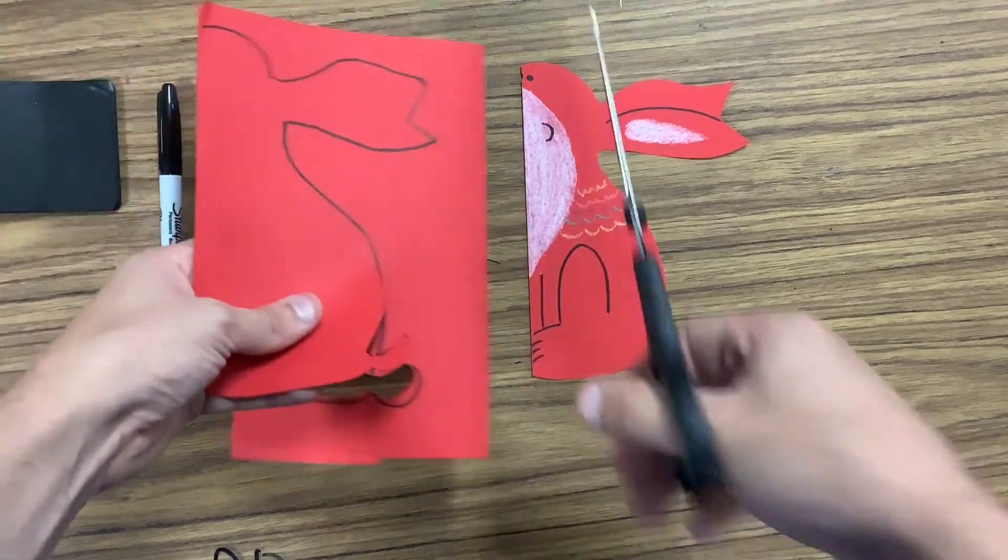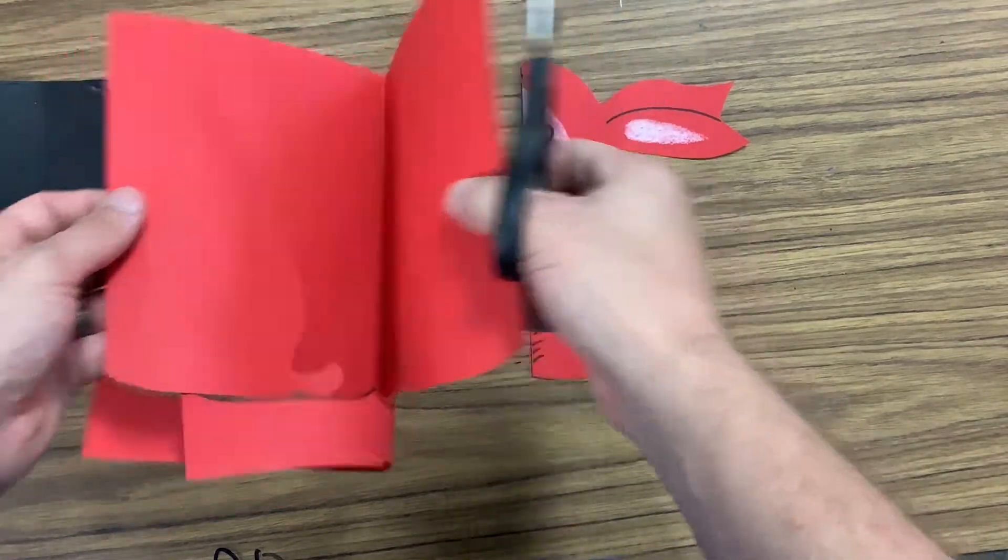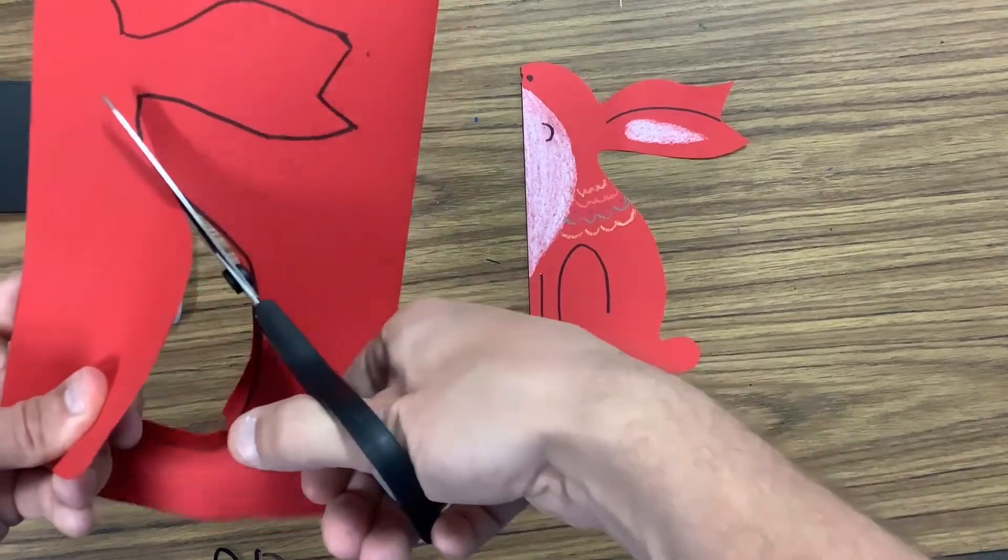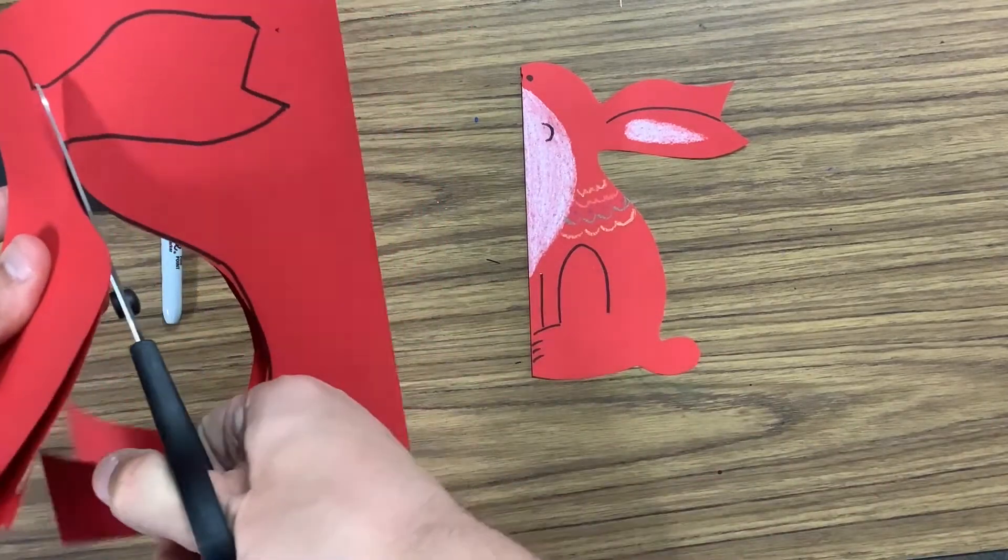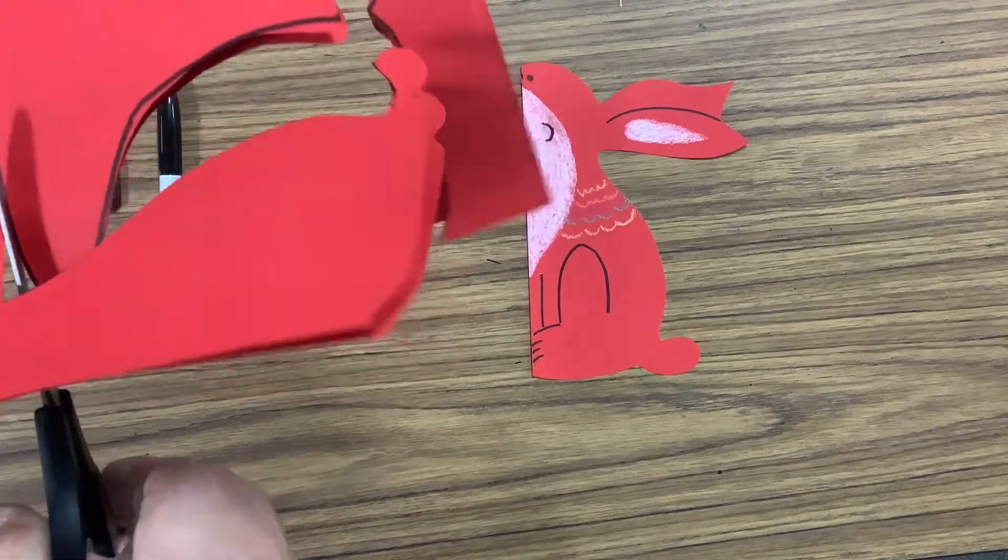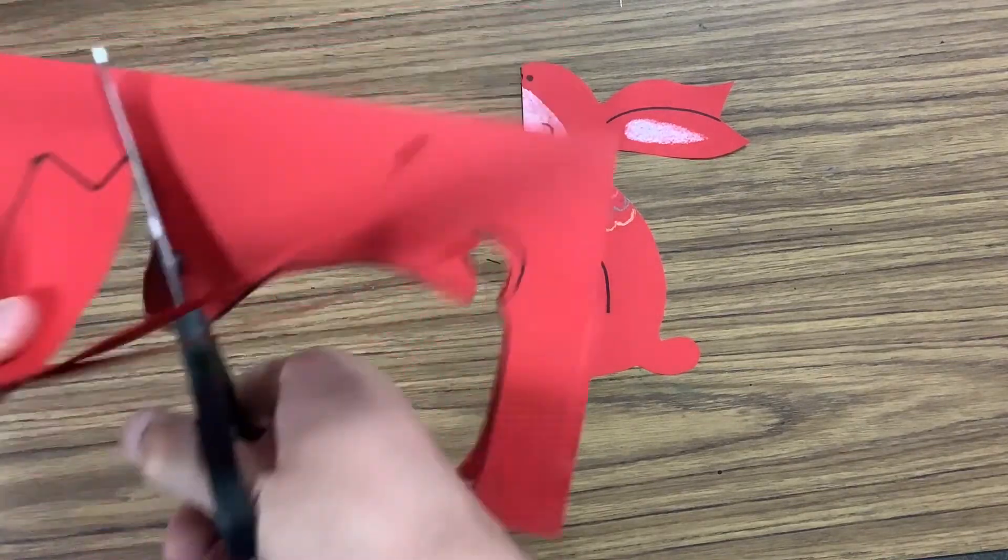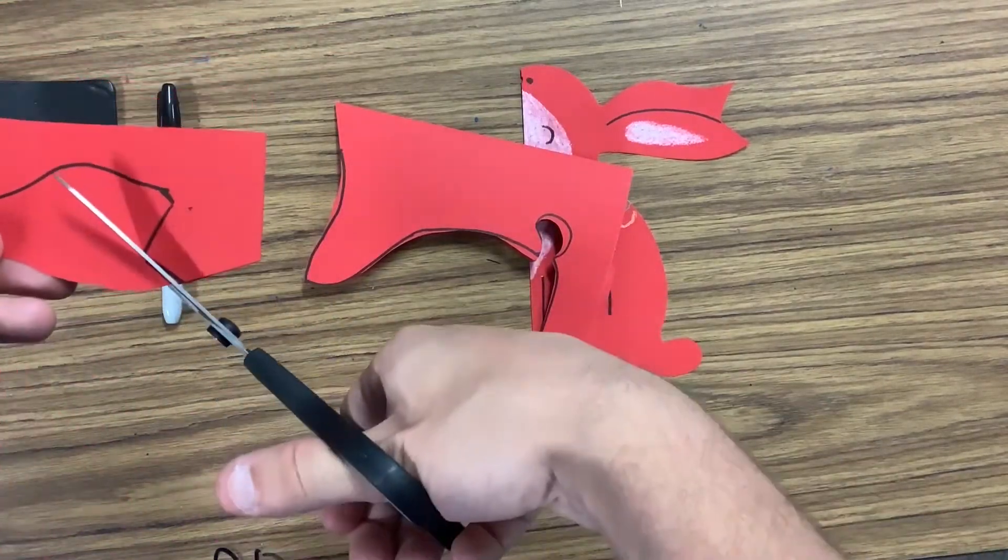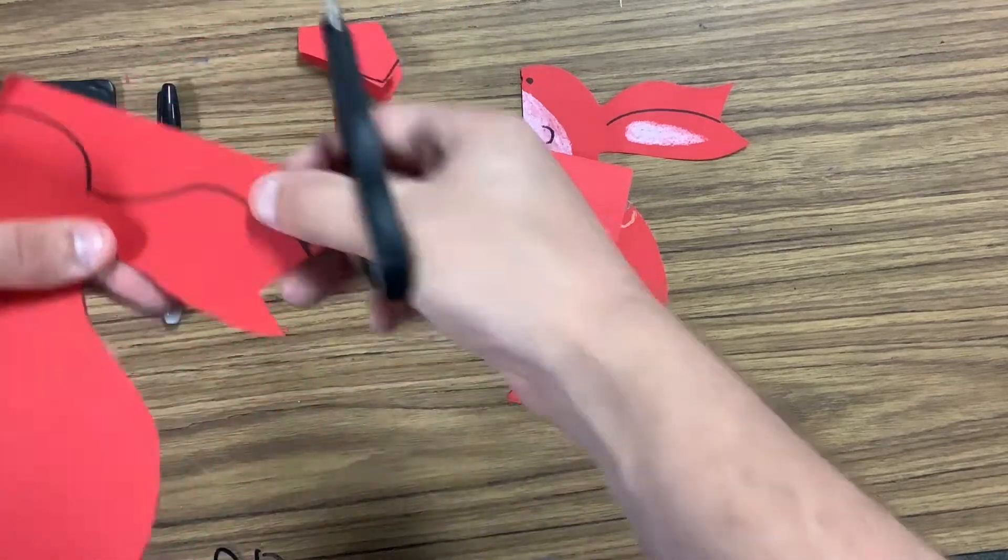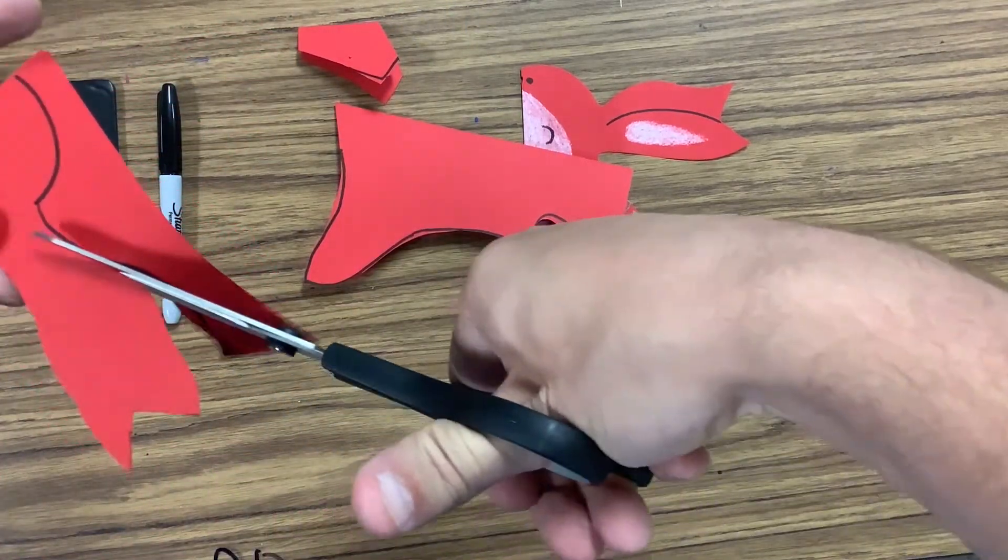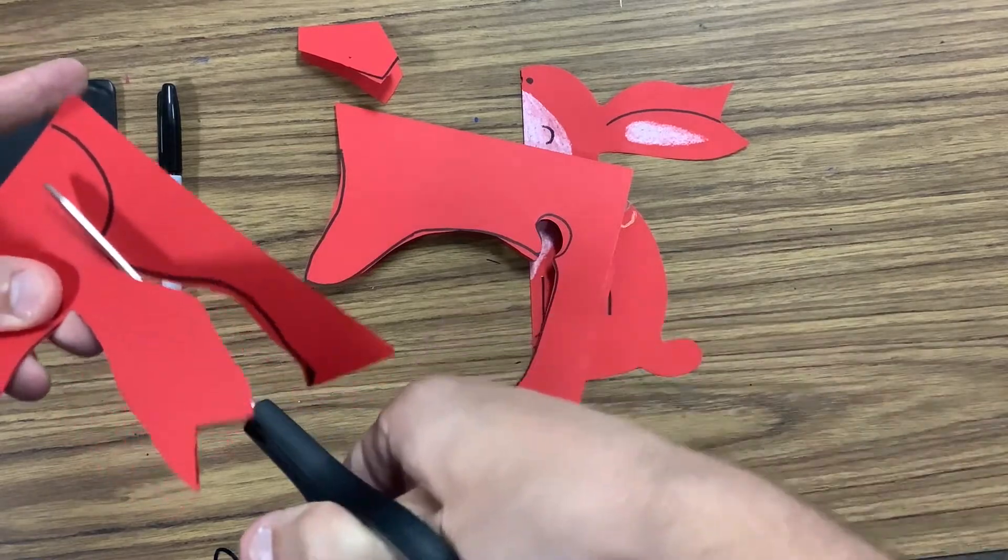Now, notice my paper, when I started, I left it folded. I don't want to unfold it. If I unfold it, I'm not going to get two bunnies. I'm just going to get one. And then I'll have lost some of my Sharpie marks. I won't know where to cut. So leave it folded as you cut. There's one. Get that V.